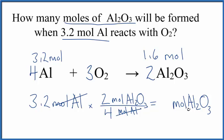We have moles of aluminum oxide left over, and 3.2 times 2 over 4 equals 1.6, just like we found before. That's how you use the mole ratio to solve this problem.